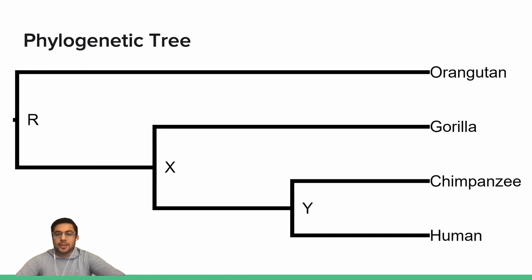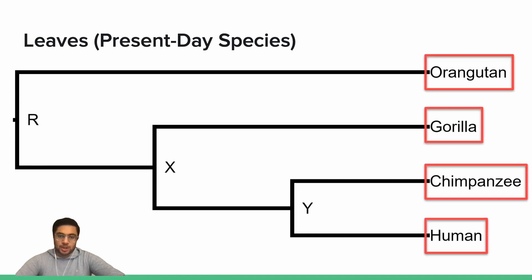Now that we have an understanding of tree structure, let's map the components of a tree data structure onto the example rooted phylogenetic tree from earlier. In a typical phylogeny, the leaves represent present-day species. The leaves in this phylogeny are orangutan, gorilla, chimpanzee, and human.